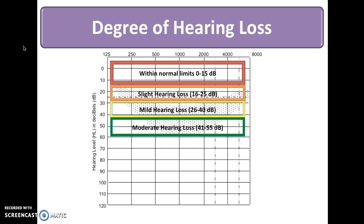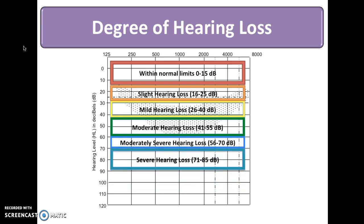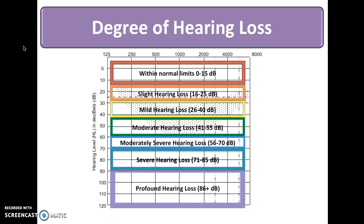If thresholds, or the circles and X's, fall between 41 and 55 dB, we say there is a moderate hearing loss. If thresholds fall between 56 and 70 dB, we say there is a moderately severe hearing loss. If thresholds fall between 71 and 85 dB, we say there is a severe hearing loss. If air conduction thresholds are greater than 86 dB, we say there is a profound hearing loss.